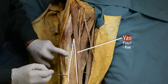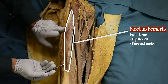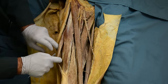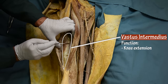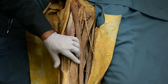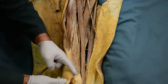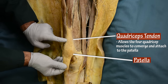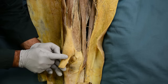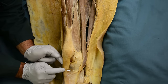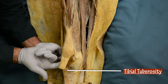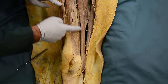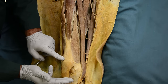Each head of the quadriceps muscle is considered a separate muscle. These muscles are vastus medialis, rectus femoris, vastus lateralis, and vastus intermedius. The tendon of these four muscles attaches to the borders of the patella and is called the quadriceps tendon. After the patella, the muscle inserts to the tibial tuberosity via the patellar ligament or patellar tendon. The quadriceps muscle is in charge of extension of the knee joint.